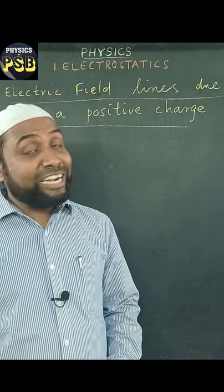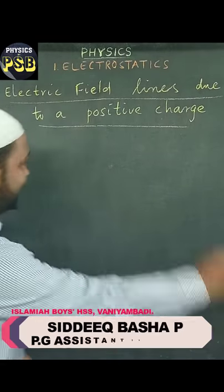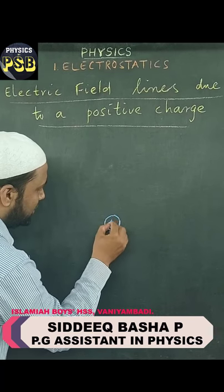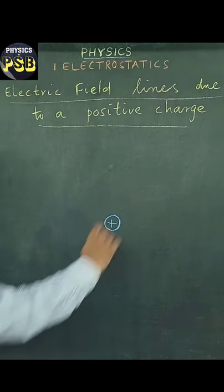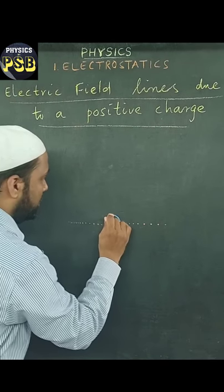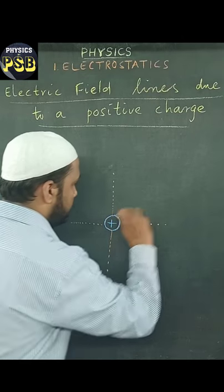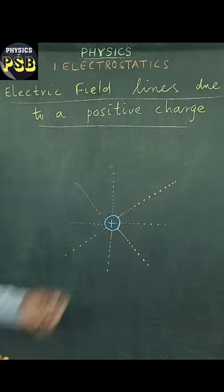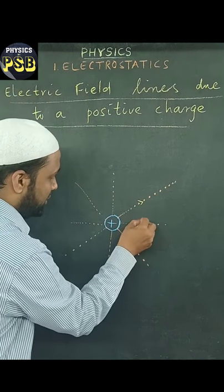Let me show you how electric field lines appear due to a positive charge. Suppose this one is a positive charge — the electric field lines appear to be projecting outwards due to a positive charge. They project outwards.